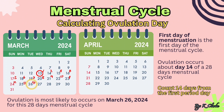Try this question: on which date will ovulation occur for a 28-day menstrual cycle if menstruation starts on the 7th of April, 2024? Pause the video and type your answer in the comment section.